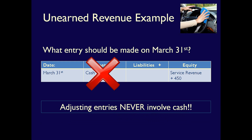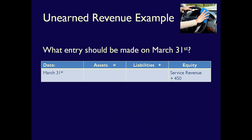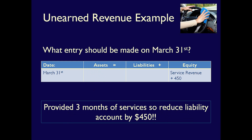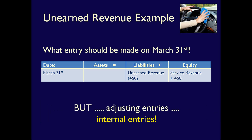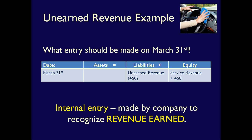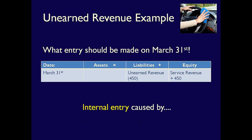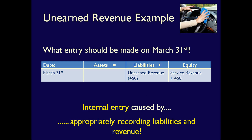As noted in the prepaid expense video, adjusting entries never involve cash. Instead, what we did is provide three months of services, so we don't owe five months of services anymore, and we have to reduce the liability account by the amount we have earned — a reduction in unearned revenue of $450, because we don't owe the customer that anymore. Adjusting entries are internal entries; there is no paper trail to tell us we have to do this, except the fact that we provided a service. It's an entry made by the company to recognize that they earned something, so the liability moves to being a revenue. The entry is triggered by the need to report to external parties, ensuring only liabilities still owed remain on the balance sheet.